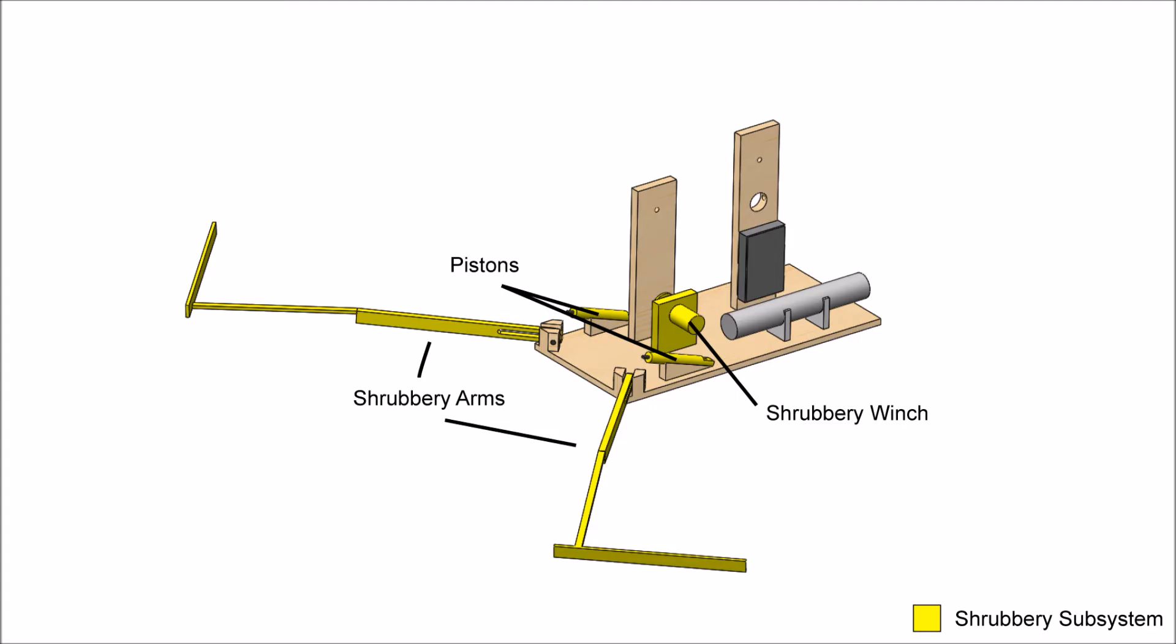The machine consists of four main systems: shrubbery arms, the grenade chute, the black knight hook, and the holy grail arm. The team got to work to quickly develop this system in time for the competition.